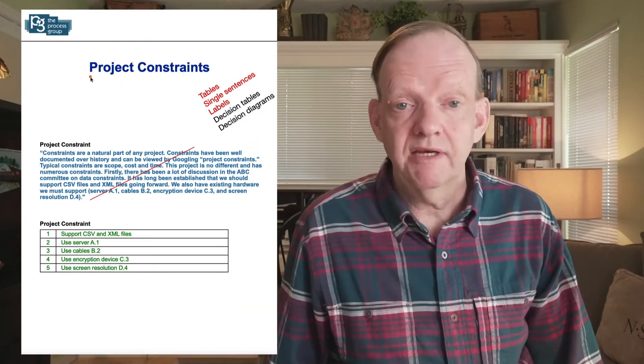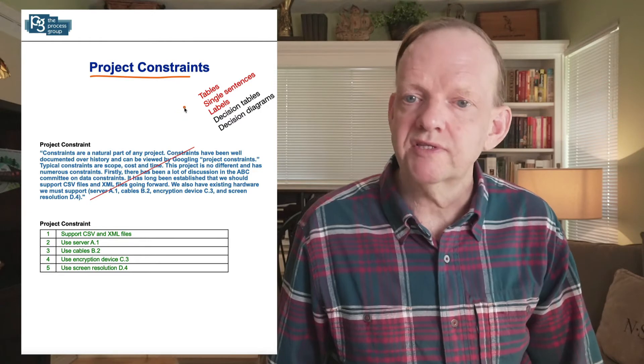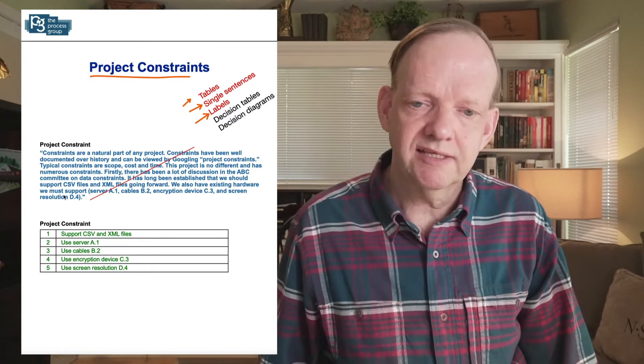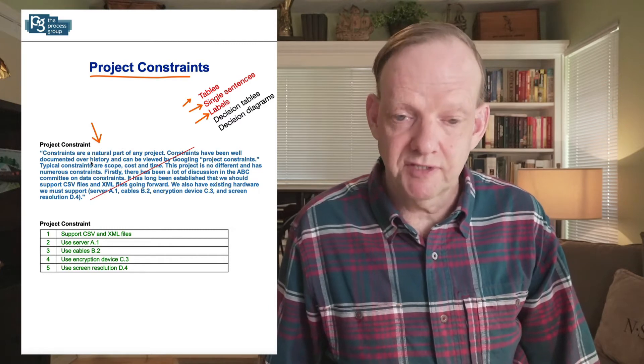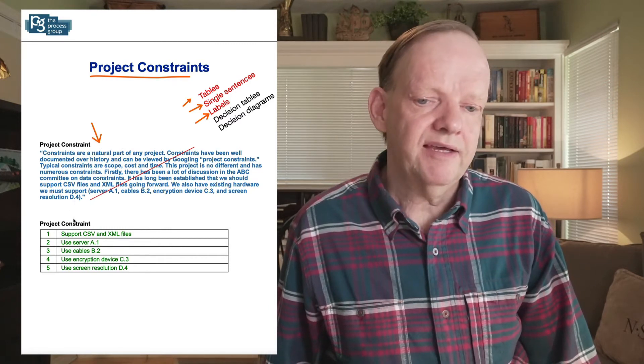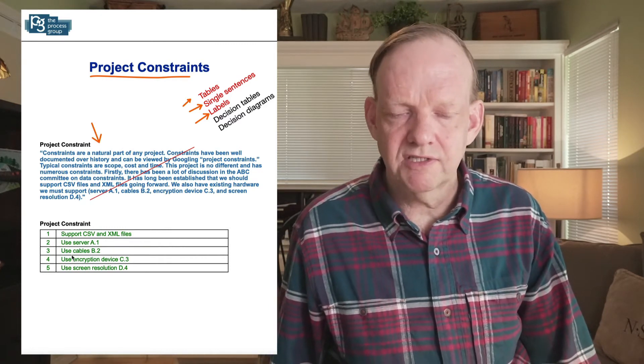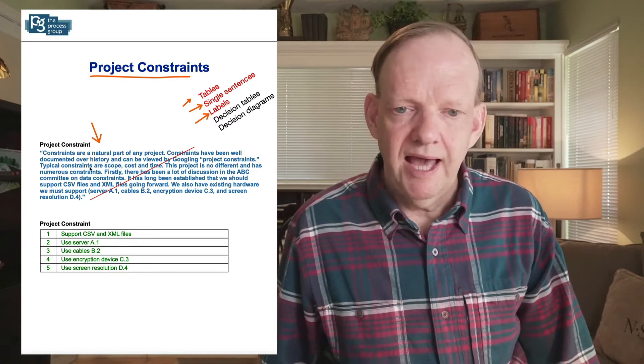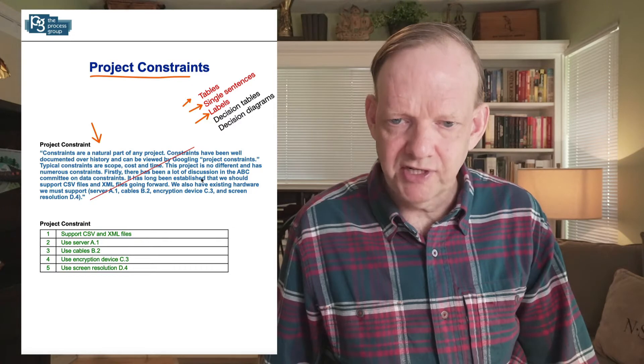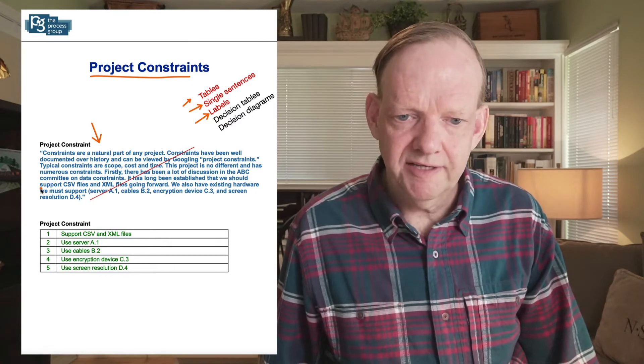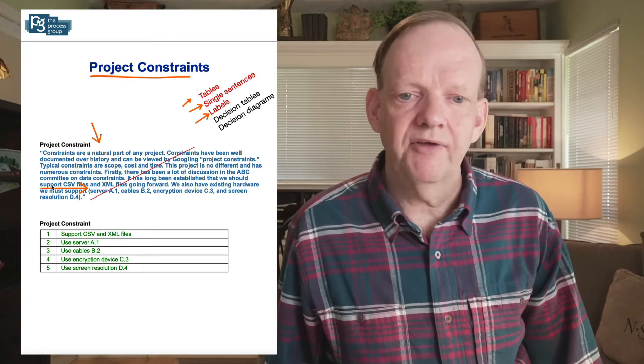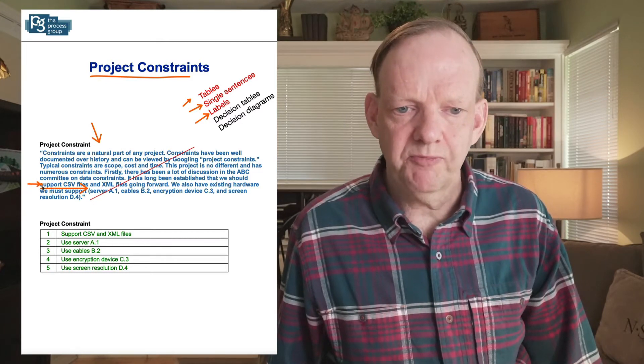So let's take our second example here of constraints. We're going to use the table format, the single sentences and labels to take this paragraph here and make some sense out of it. In that case, we ended up with five constraints. If you read the paragraph, there's a lot of fluff in here. Actually, the first constraint actually comes out down here.